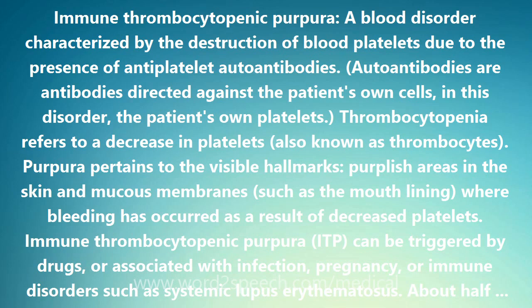Immunothrombocytopenic purpura, ITP, can be triggered by drugs, or associated with infection, pregnancy, or immune disorders such as systemic lupus erythematosus. About half of all cases are classified as idiopathic, meaning the cause is unknown. The abbreviation ITP is much used — it stands for both immune thrombocytopenic purpura and idiopathic thrombocytopenic purpura.